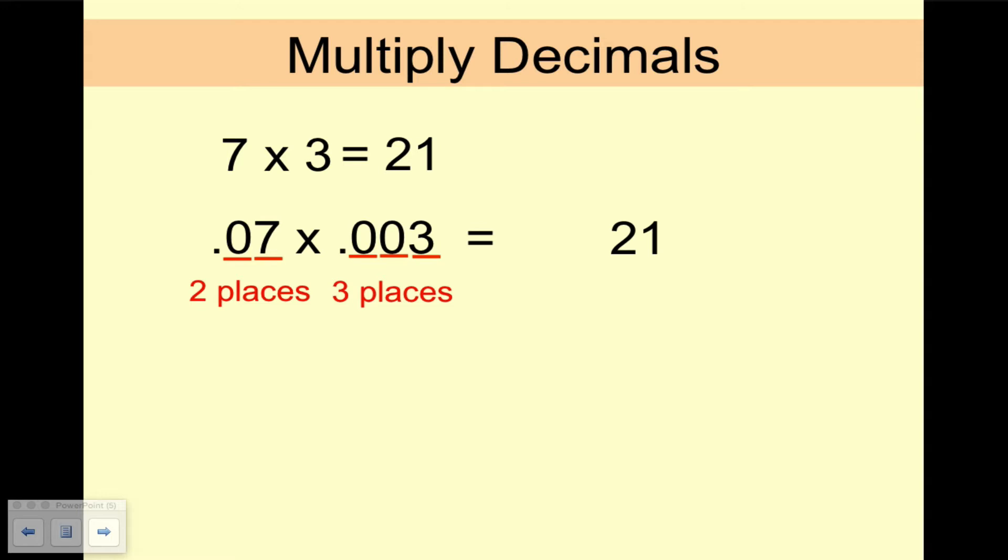So to put 5 places, that means we need 3 zeros in front of the 21. So it's going to be 0.00021.